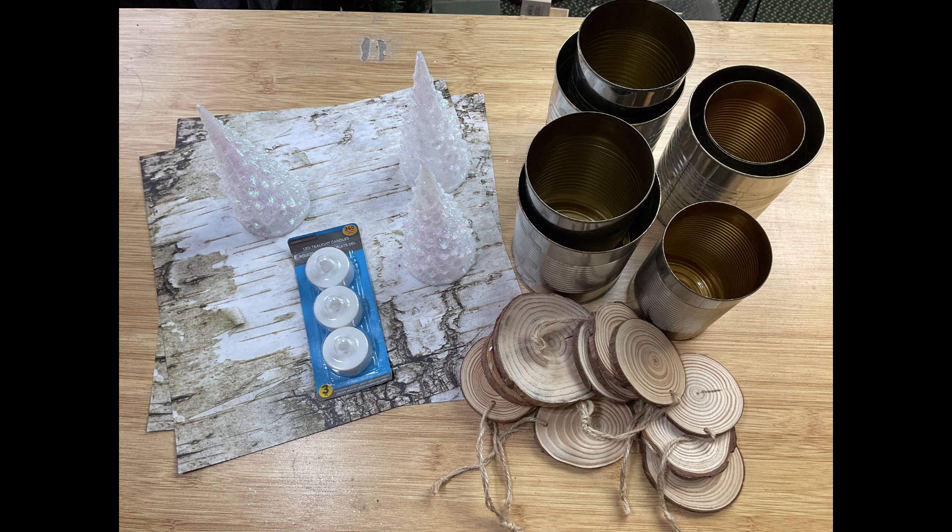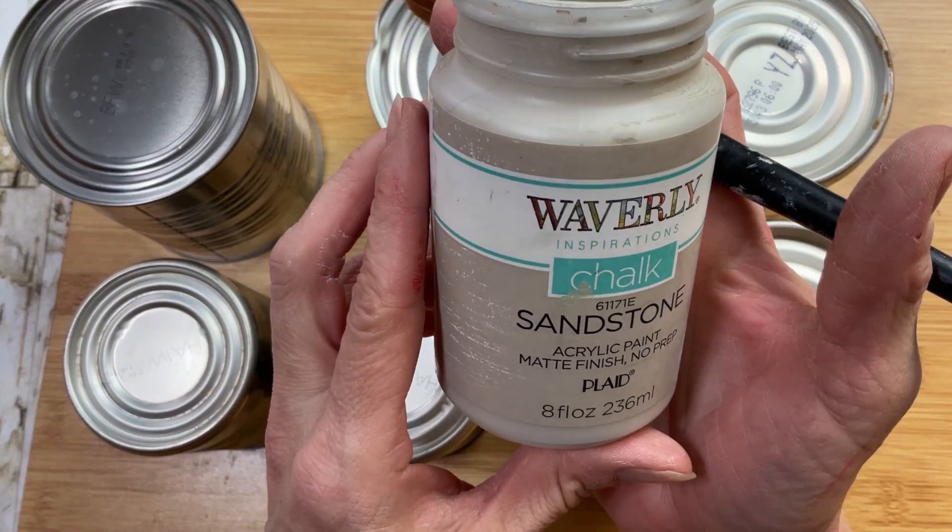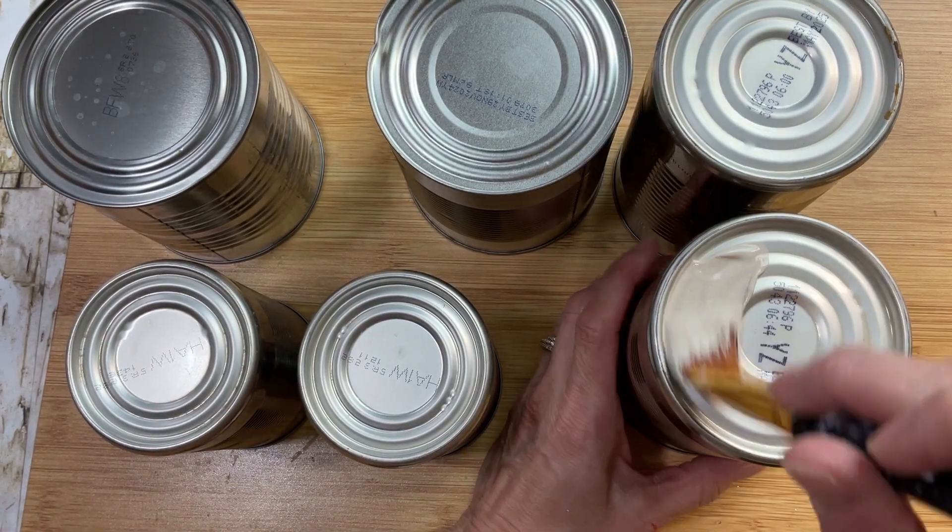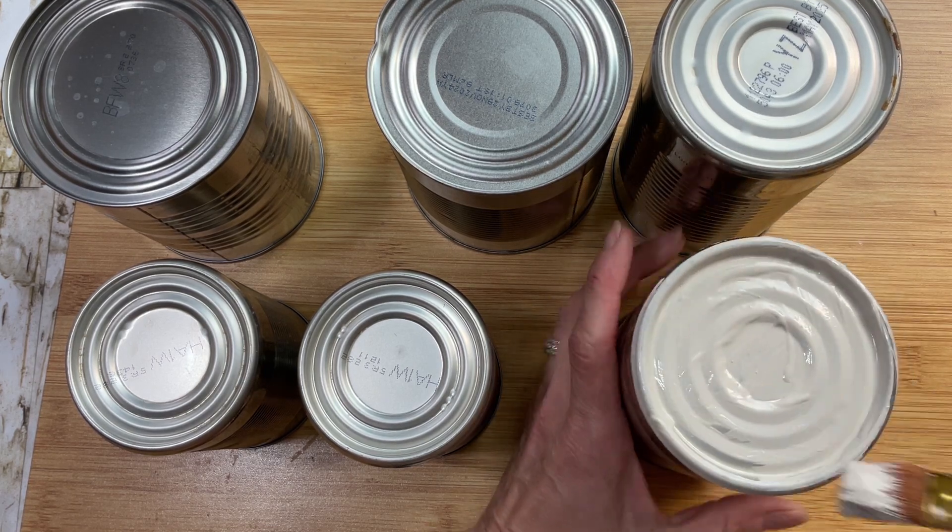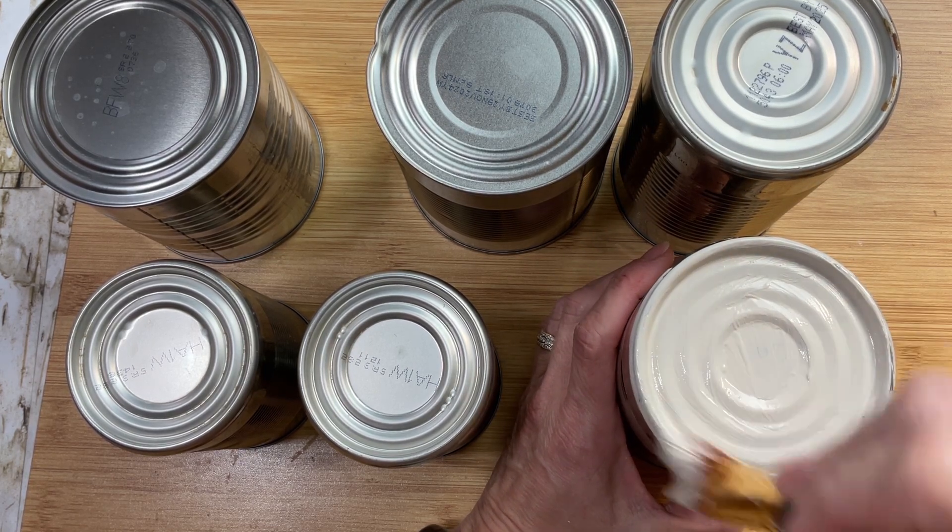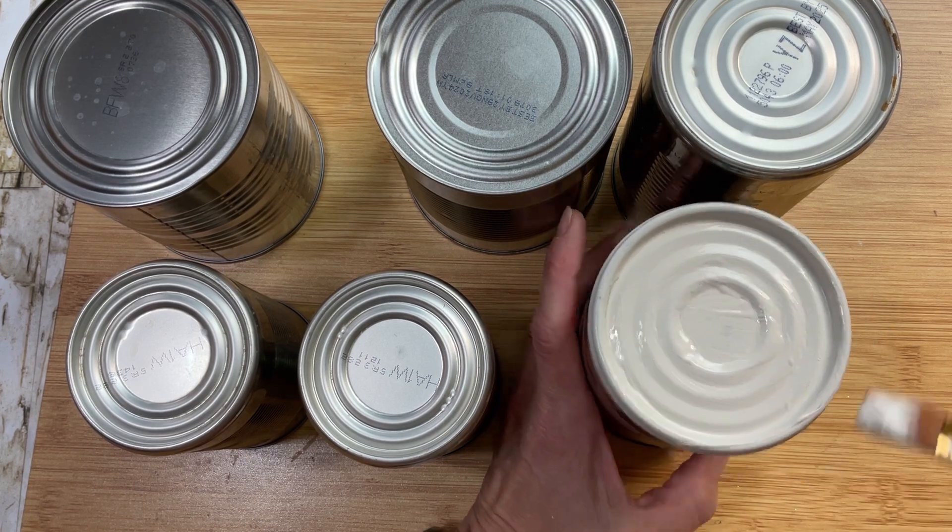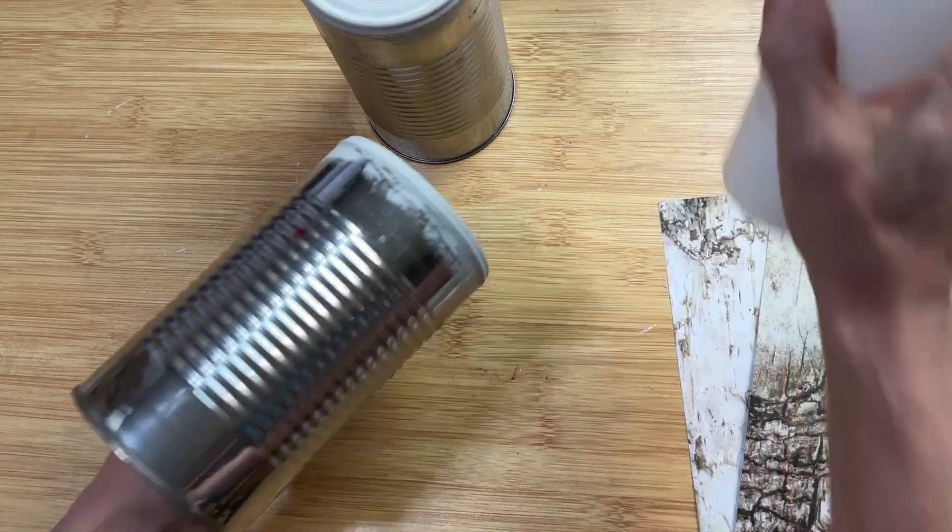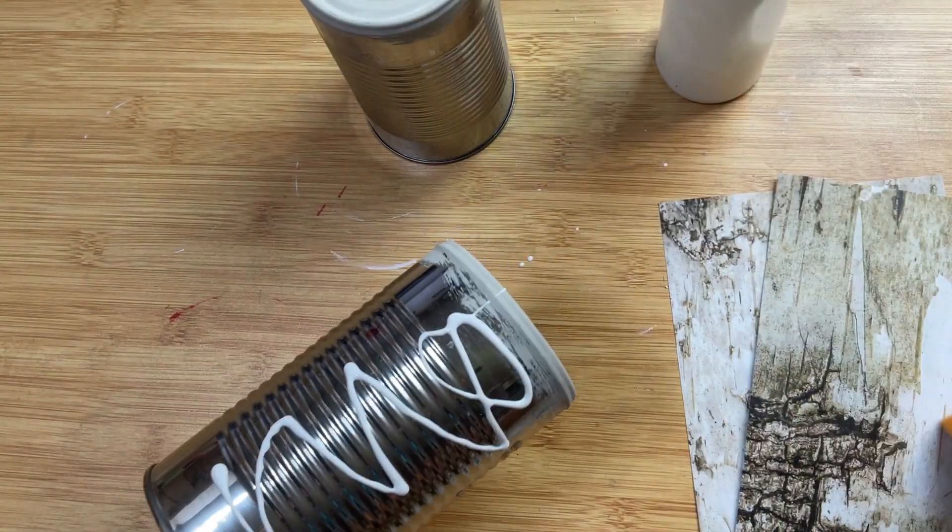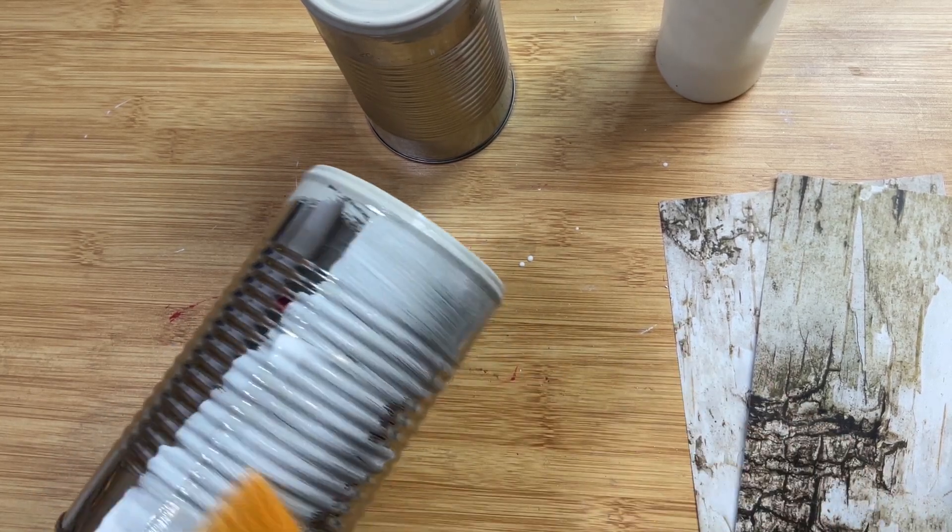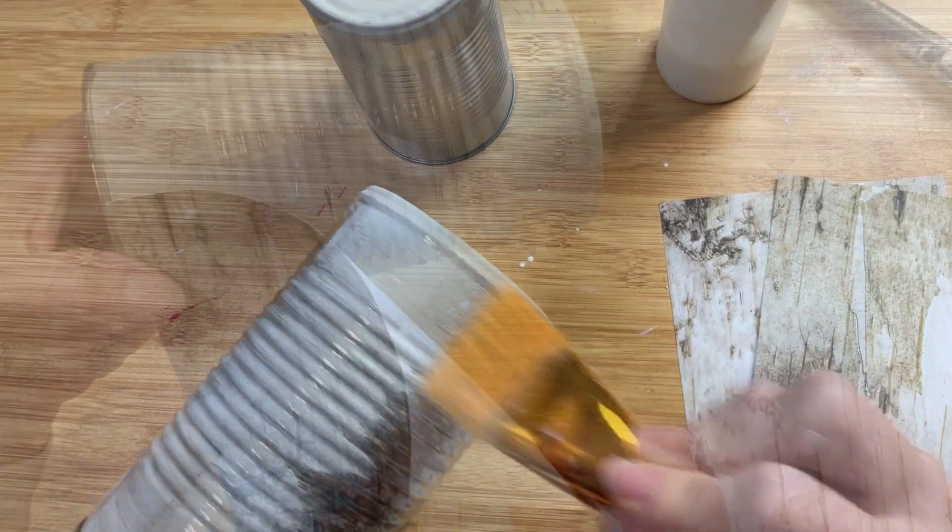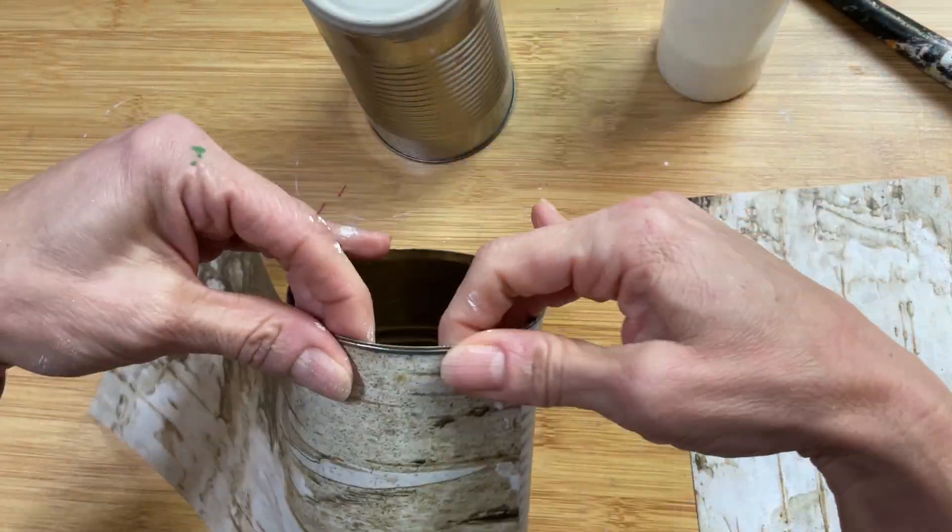This first one is a birchwood neutral centerpiece using some birchwood scrapbook paper, some recycled cans, and a few other items. So I pulled two of each size. I've got three different sizes of cans here from my recycled pantry and I'm painting the bottoms with sandstone and then I'm going to use this scrapbook paper from Hobby Lobby that looks like birch bark and I'm going to mod podge it onto the sides of my cans.